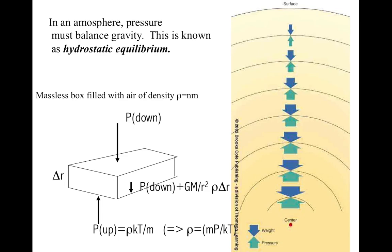So let's now consider what happens in an atmosphere. In an atmosphere, in order for the atmosphere not to fall, pressure must balance gravity. This is what's known as hydrostatic equilibrium.